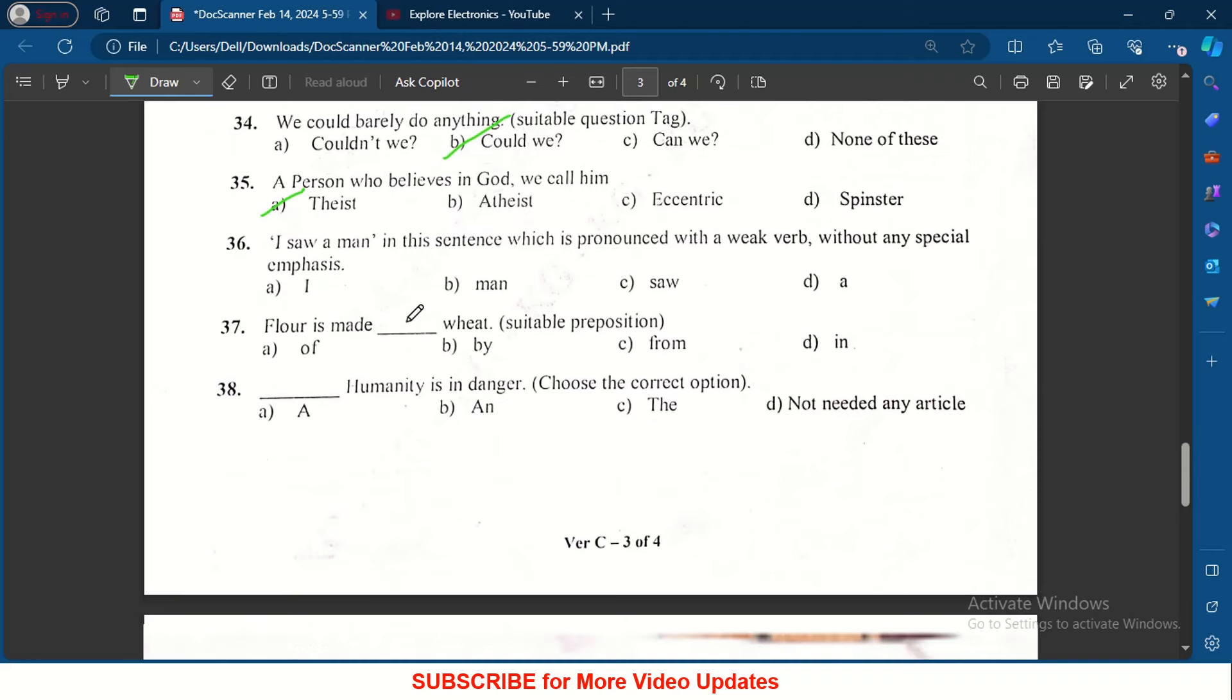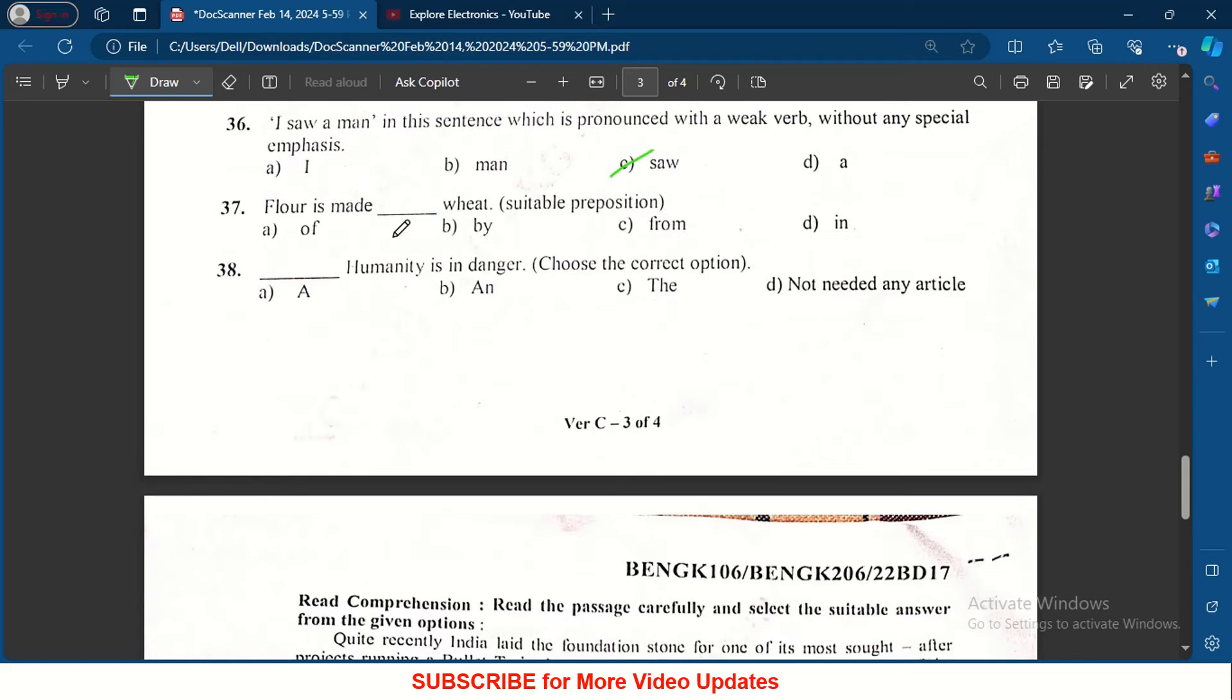I saw a man. In the sentence which is pronounced with a weak verb without any special emphasis, the answer is saw: I saw a man. Floor is made of dash from wheat dash. Humanity is in danger - the humanity is in danger.